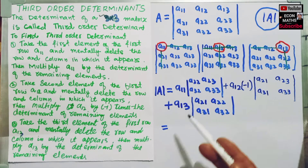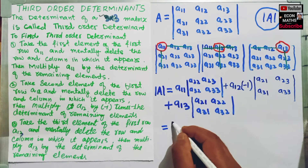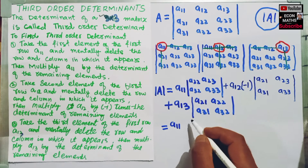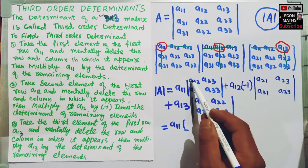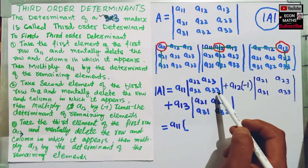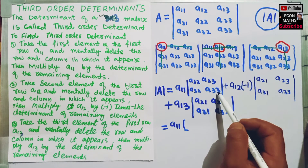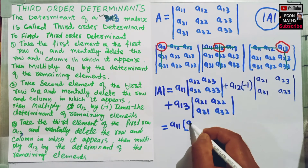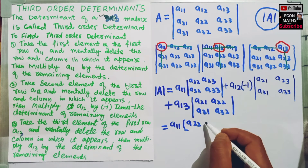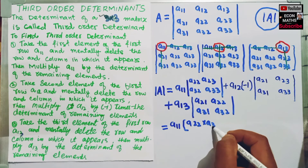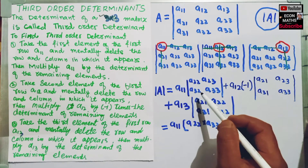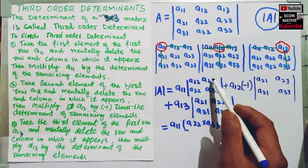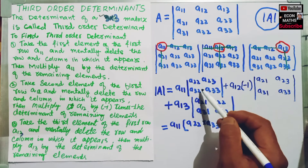Now we will solve this. This becomes A11. The two elements on the principal diagonal will be multiplied — that is A22 times A33 — and we will subtract the product of the elements on the non-principal diagonal.